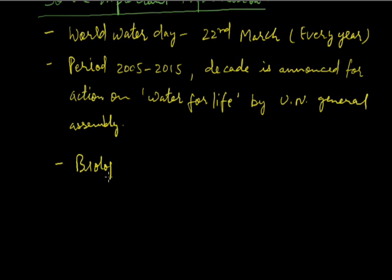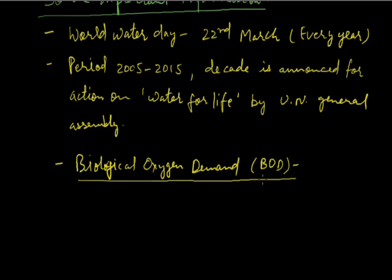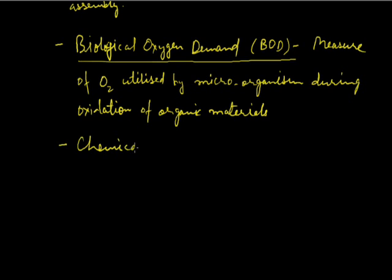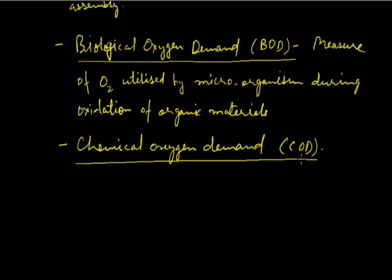Biological Oxygen Demand, BOD, is a measure of oxygen utilized by microorganisms during oxidation of organic materials. Chemical Oxygen Demand, COD, is an index of waste, which may be organic or inorganic present in water, that can be oxidized by strong oxidizing agents.